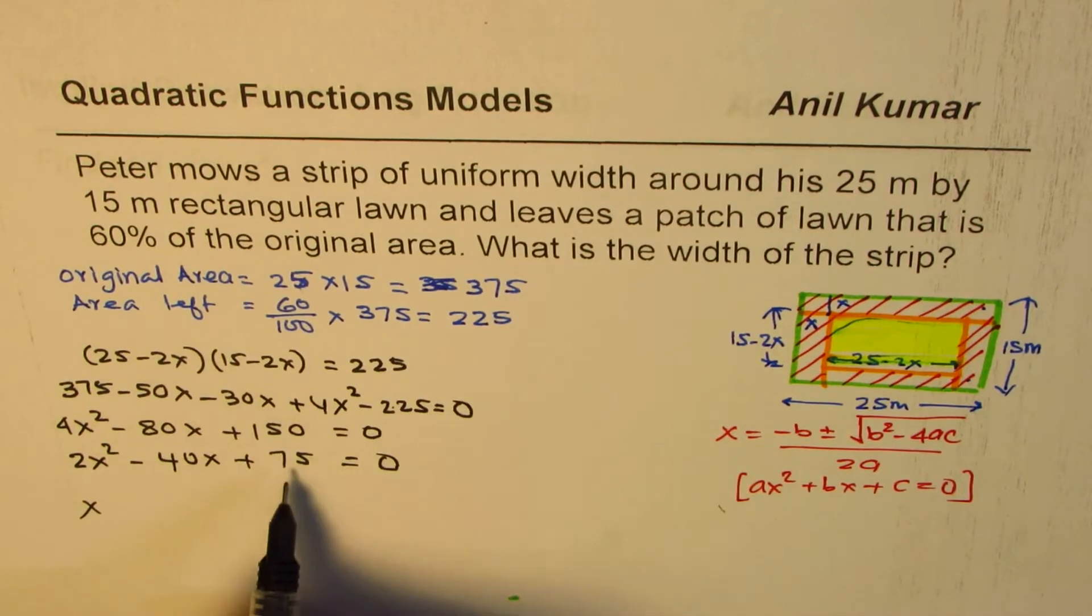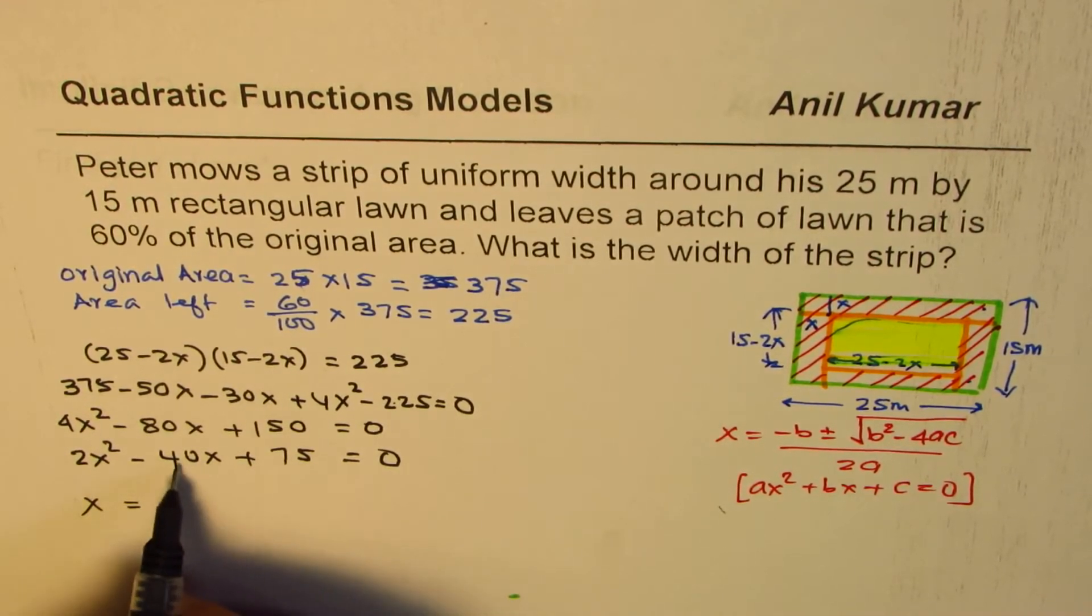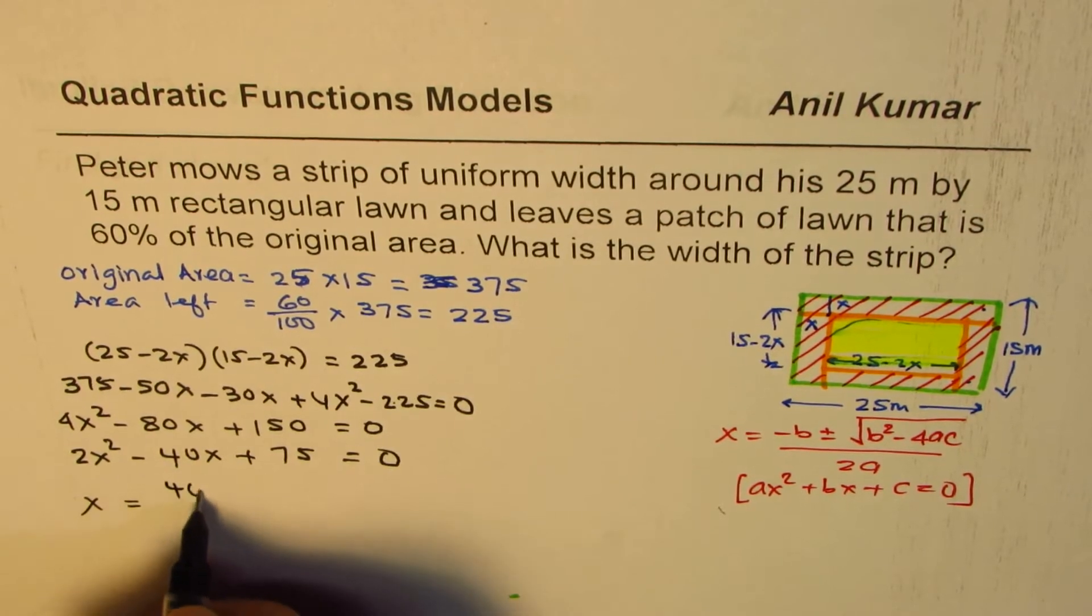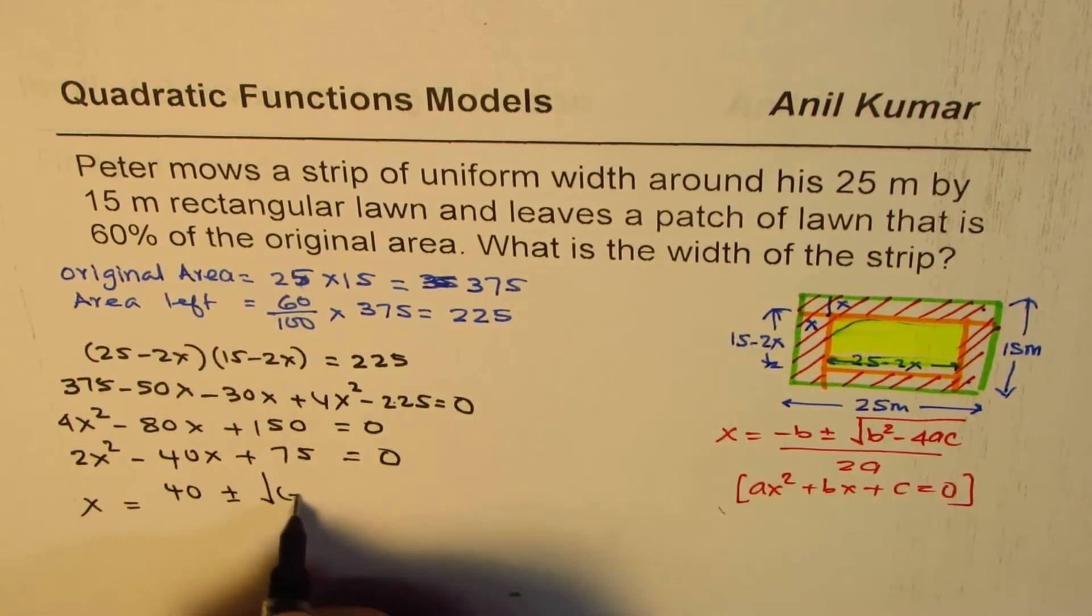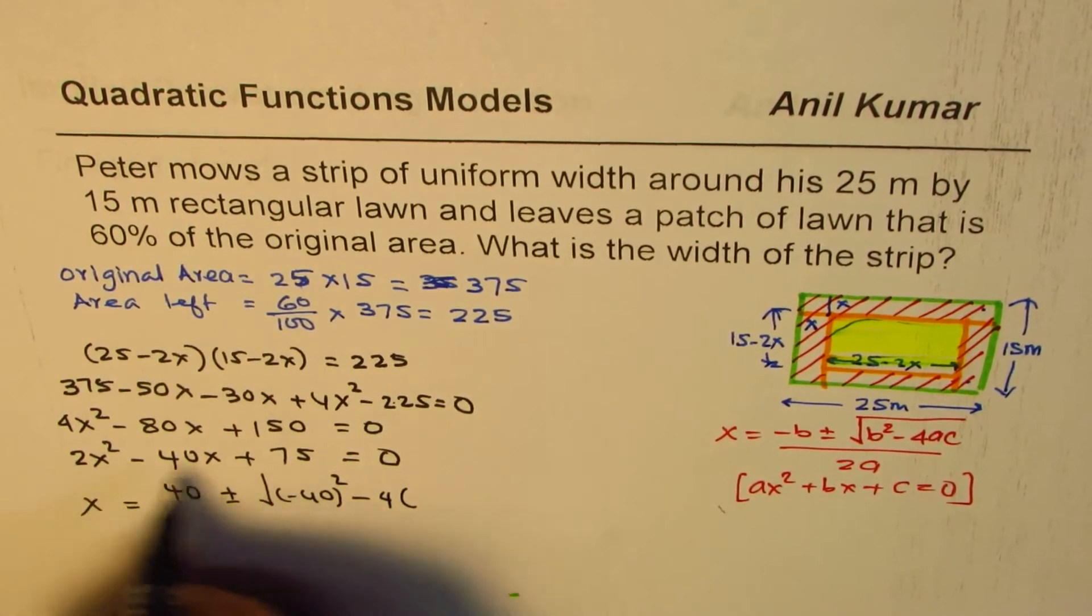So x is minus of minus 40, which is plus 40, plus or minus square root of (-40)² minus 4 times 2 times 75, divided by 2 times 2. That gives you the value.